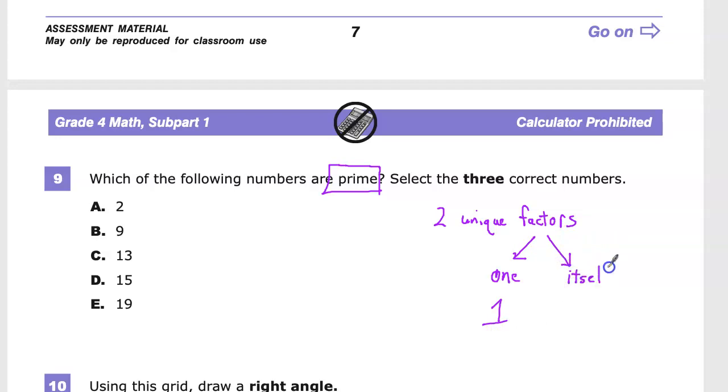Whatever its value is, which means one itself is not a prime number because it doesn't have two unique factors. It only has one factor, which is itself. So it meets half the criteria, but not the other half, just FYI.